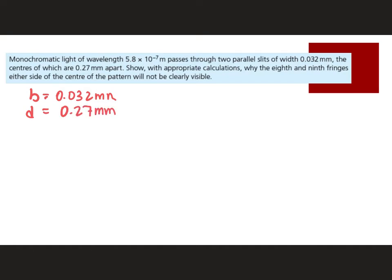Now, we're asked to say why the 8th and 9th fringes will not be visible. So if we're talking about that, then we need to look at theta equals lambda over b. This will tell us where we should, or at what angle, we should have our first minima due to the single-slit interference. And I get a value of 0.0181 radians.